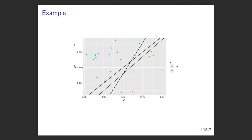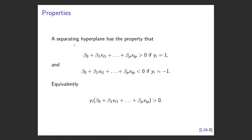Let's recap. A separating hyperplane has the property that beta 0 plus beta 1 times the predictors is greater than 0 for all cases where y equals 1, and less than 0 for all cases where y equals minus 1. We can write this in one equation: the separating hyperplane has the property that yi times the linear combination of predictors plus beta 0 is always greater than 0. That's why we classified as minus 1 and 1.